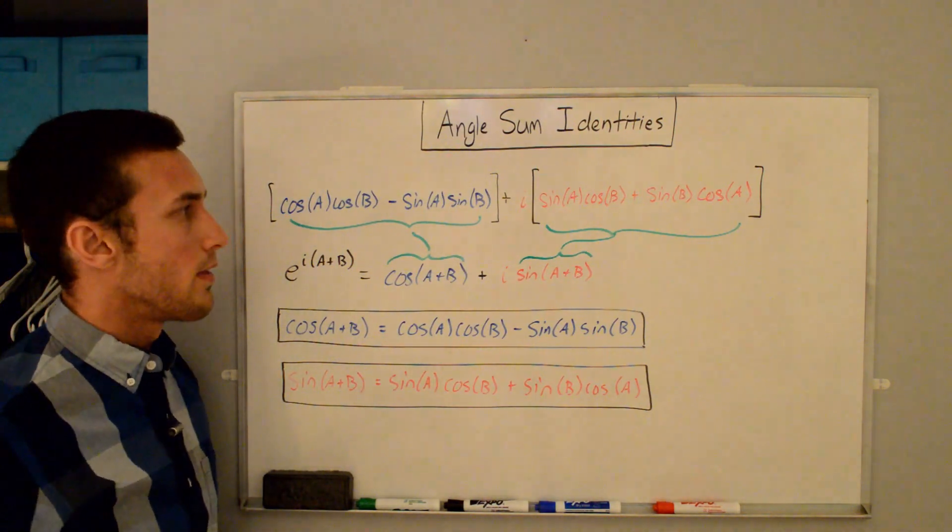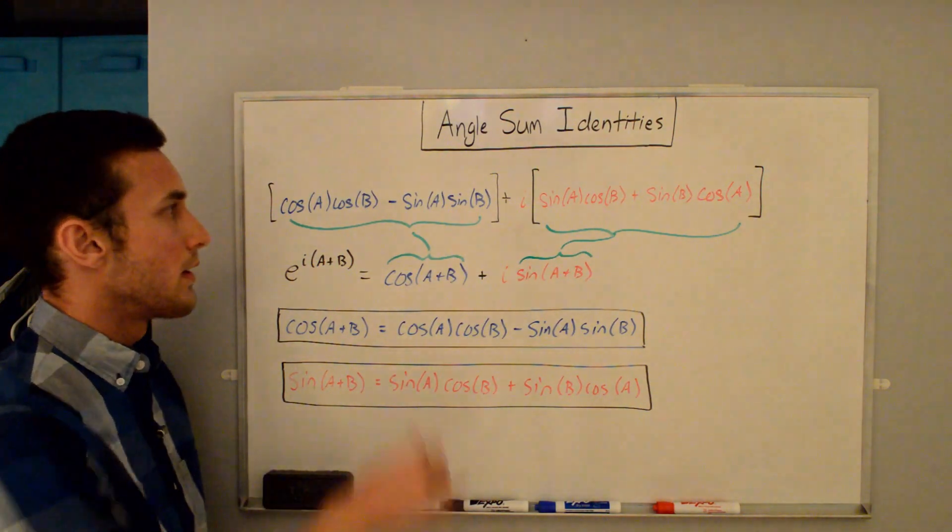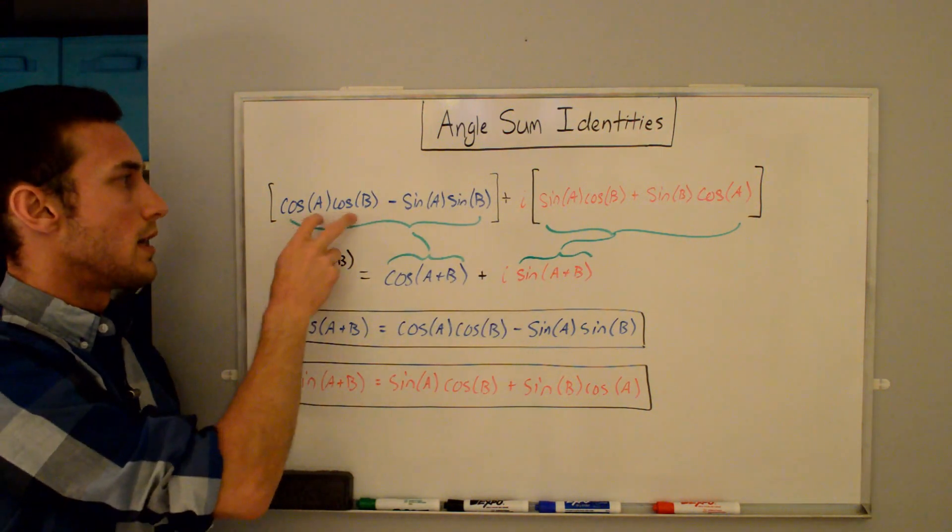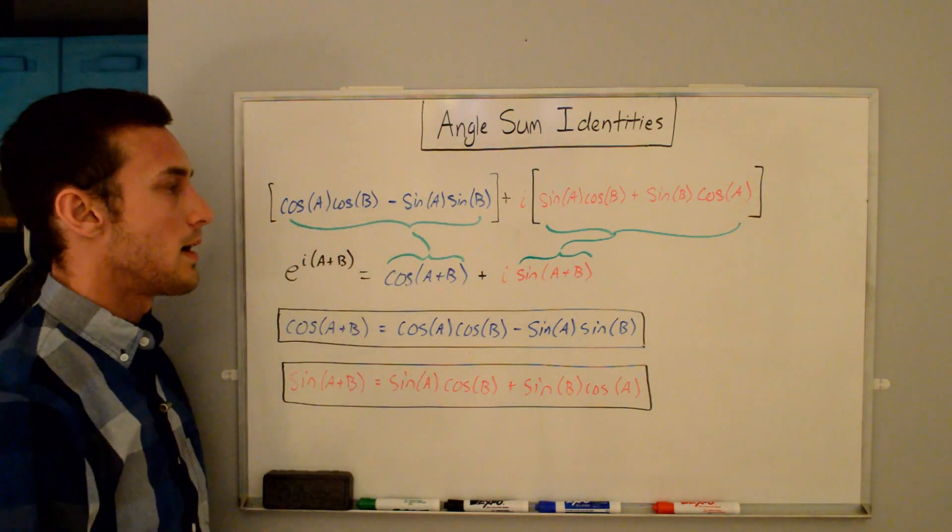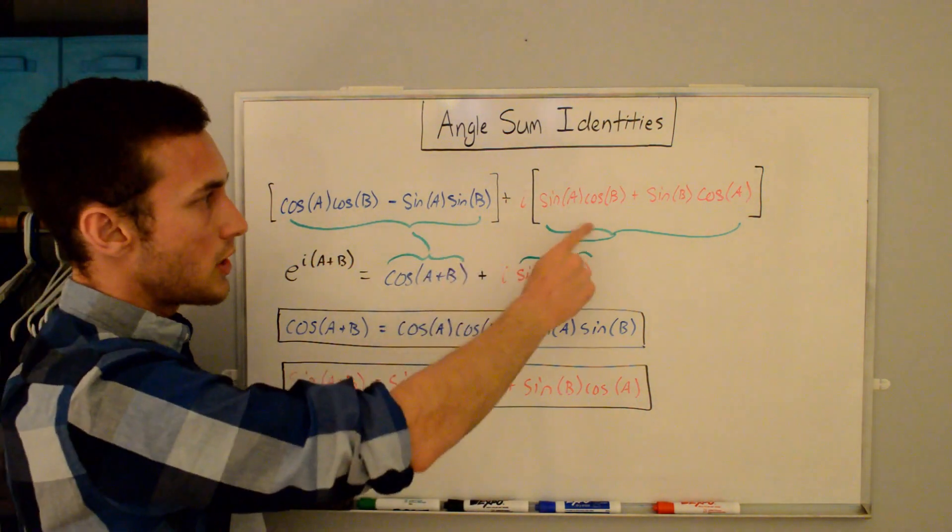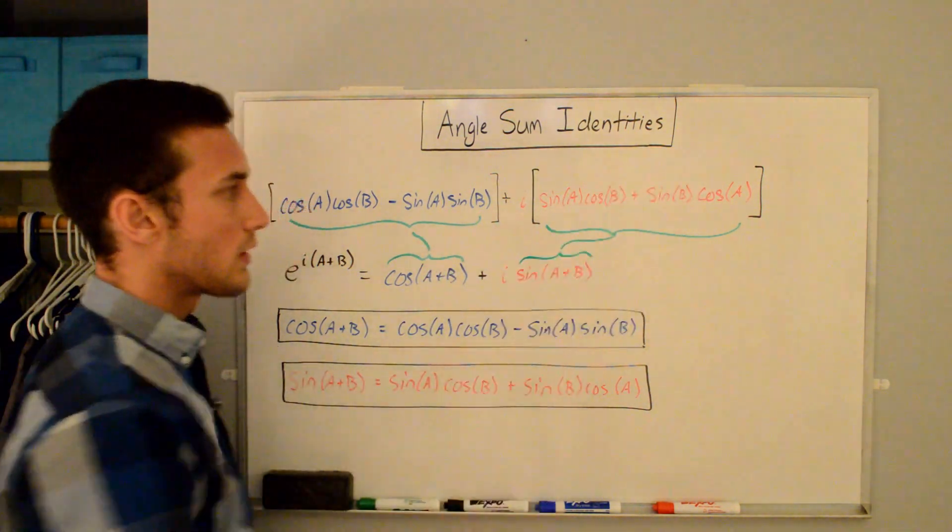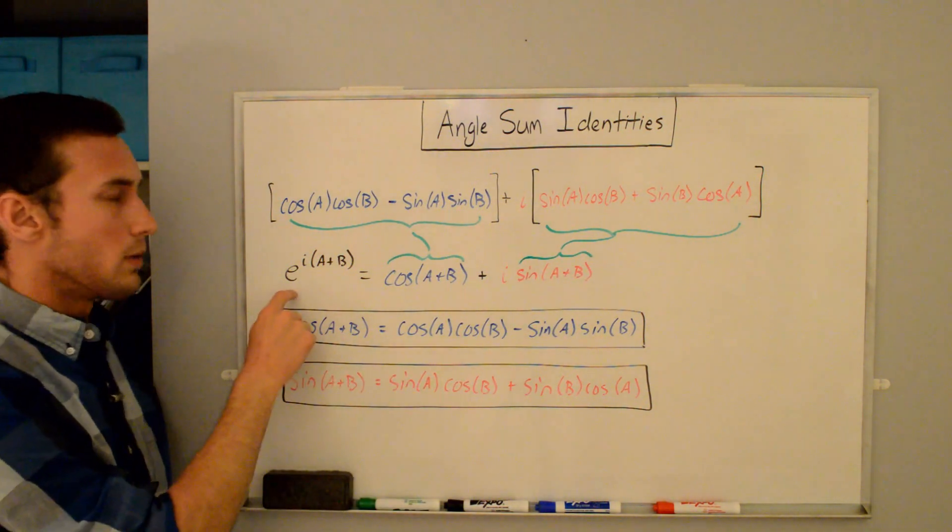All right. Now what I've done is I've grouped the real and imaginary parts together. Again, real in blue, imaginary in red. So I took the two blues and we have cos(A)·cos(B) - sin(A)·sin(B). Then we have the imaginaries plus i·sin(A)·cos(B) + sin(B)·cos(A).